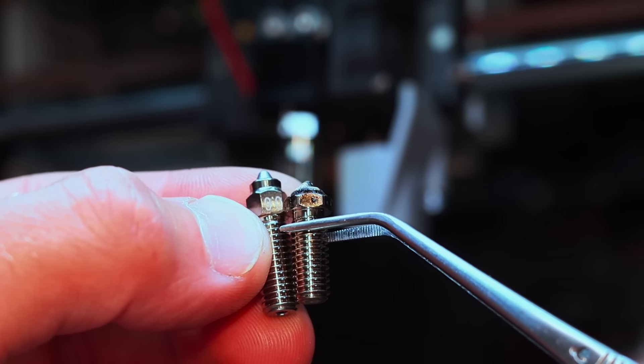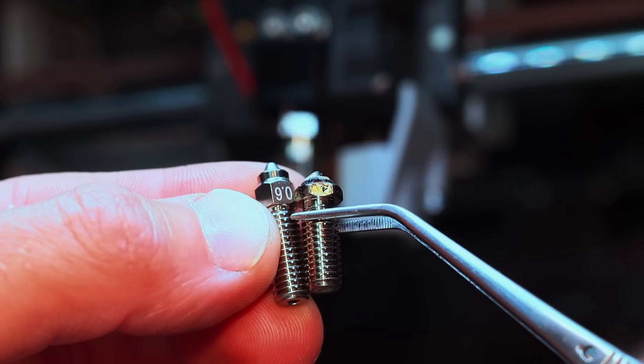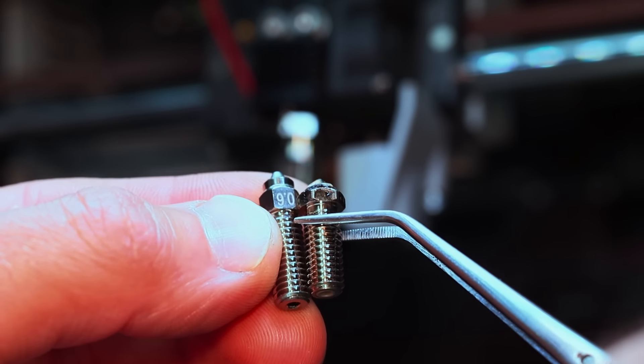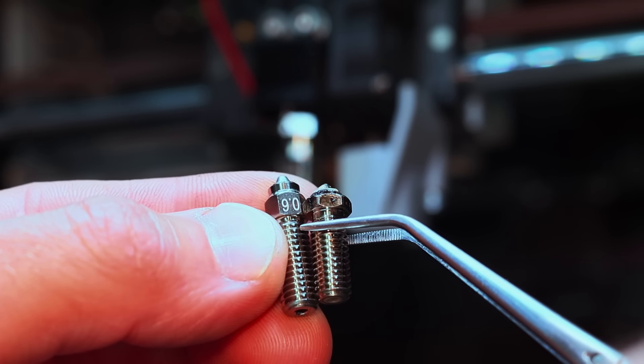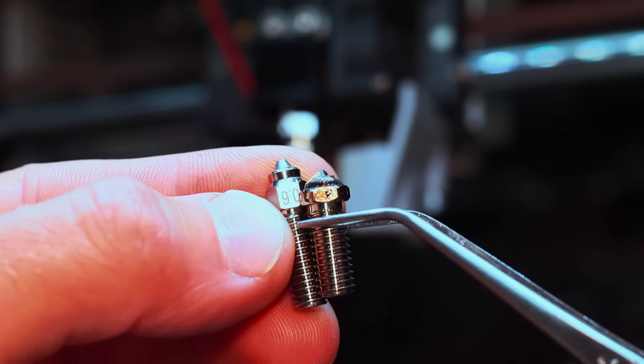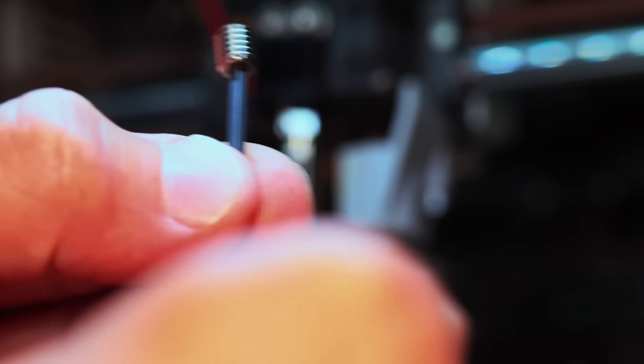And for comparison, you can see on the right we have the Chidi and on the left the Creality, slightly different on the threaded section, but the overall length is considerably different. So to get this mounted I have a two and a half millimeter allen key.